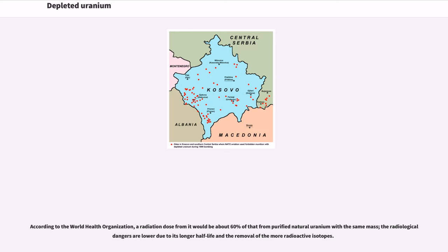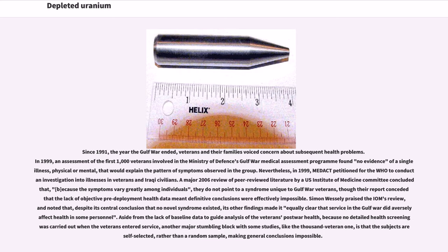According to the World Health Organization, a radiation dose from depleted uranium would be about 60% of that from purified natural uranium with the same mass; the radiological dangers are lower due to its longer half-life and the removal of the more radioactive isotopes. Since 1991, veterans and their families voiced concern about subsequent health problems. An assessment of the first 1,000 veterans in the Ministry of Defense's Gulf War medical assessment program found no evidence of a single illness, physical or mental, that would explain the pattern of symptoms observed. A major 2006 review of peer-reviewed literature by a U.S. Institute of Medicine committee concluded that, because the symptoms vary greatly among individuals, they do not point to a syndrome unique to Gulf War veterans, though their report conceded that the lack of objective pre-deployment health data meant definitive conclusions were effectively impossible.